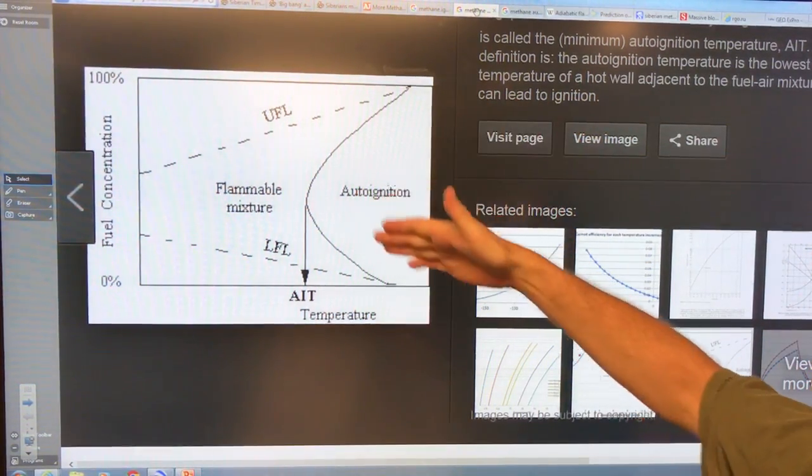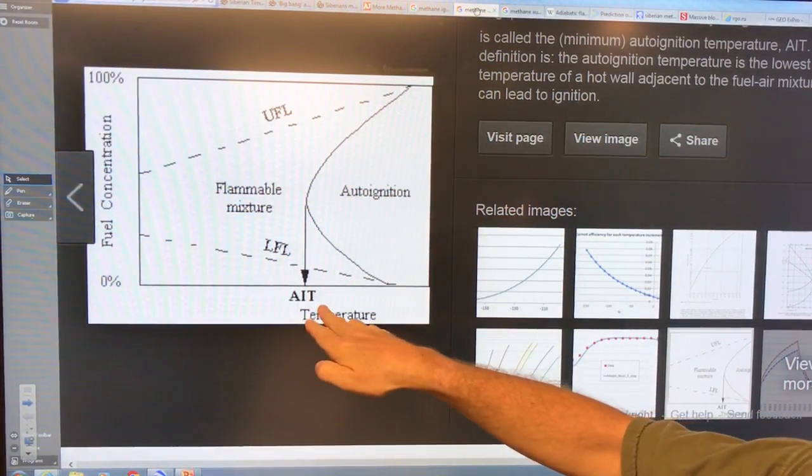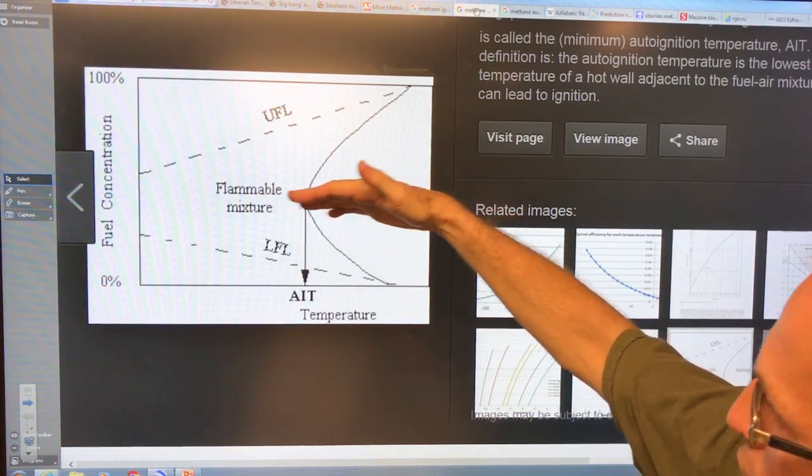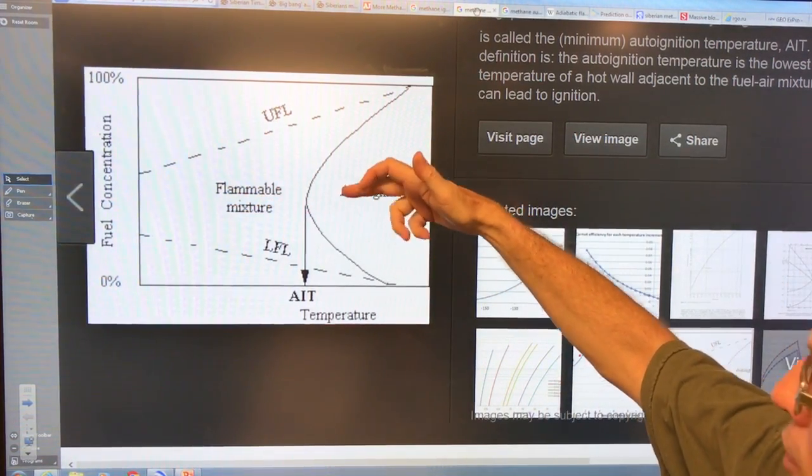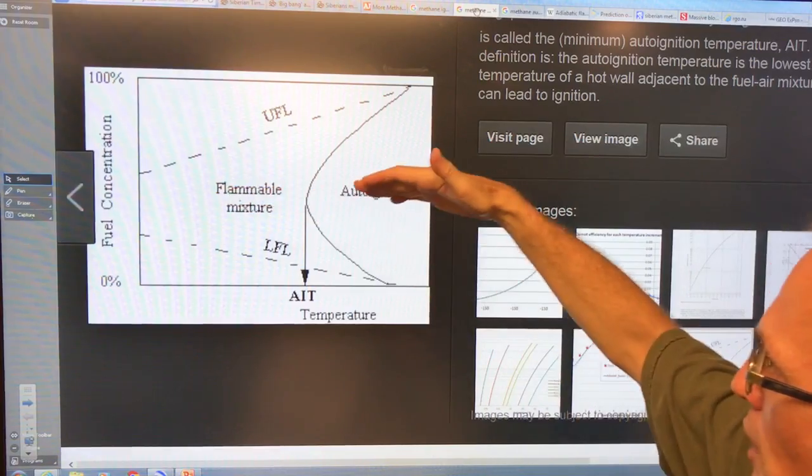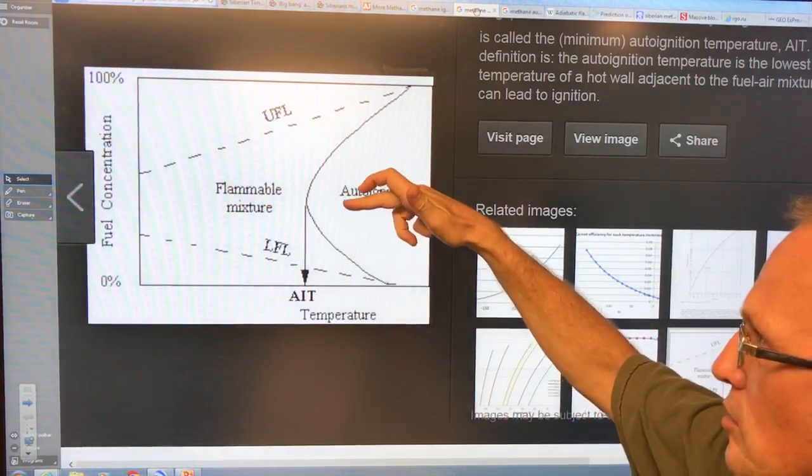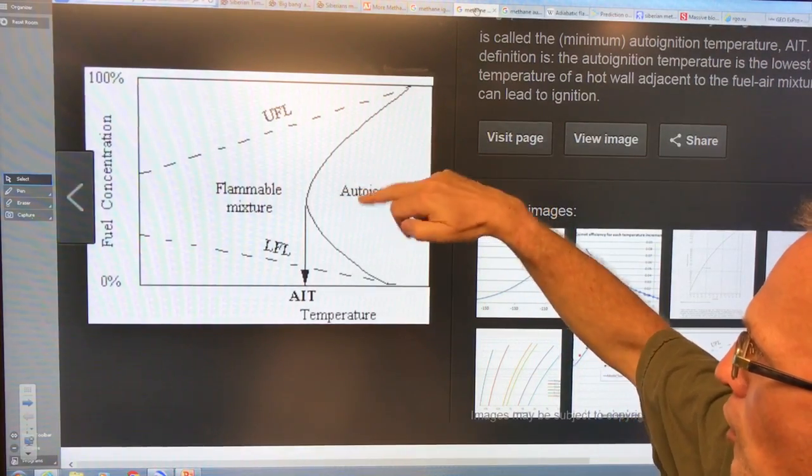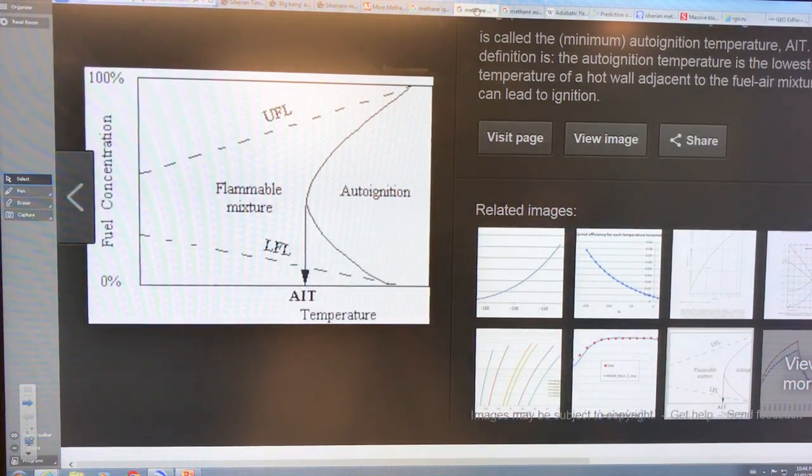So there's an auto ignition here. If this is temperature, auto ignition temperatures here. So there's a mixture, the fuel concentration, there's a mixture for gases where the auto ignition is the easiest we saw in the previous slide. It was about eight and a half percent for methane. As you go higher and lower, it's harder to ignite.